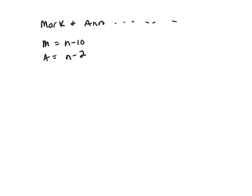Mark and Ann had each sold at least 1 box of cookies, but together would be N minus 10 plus N minus 2. Together they have sold less than N boxes, so that's less than N.